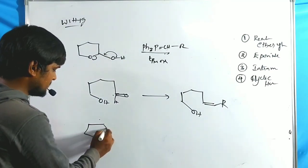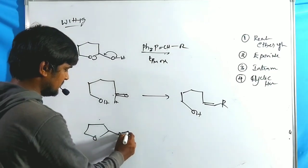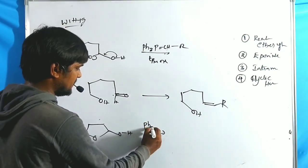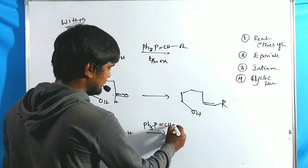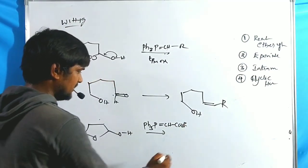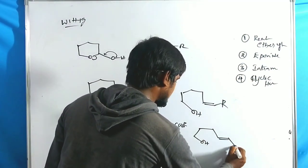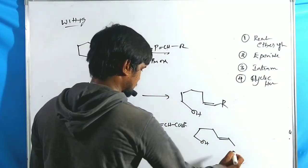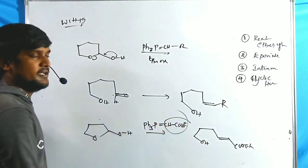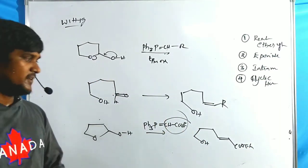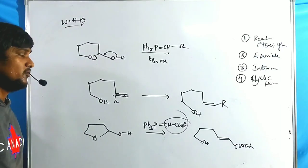In another example using PPh₃-CH-COOEt reacting with a cyclic hemiacetal, the product has an OH group and a COOEt in the trans position. This is because it is a stabilized ylide, which gives the E-isomer as the major product.